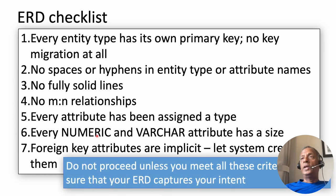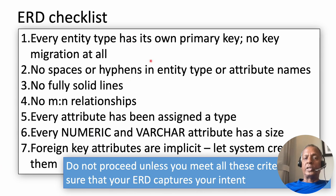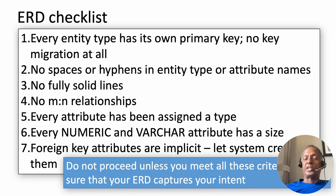So the first step for you is to come up with a description, build a logical model, and then go through this checklist to make sure everything in your logical model obeys it. If there's a problem, fix it right now.